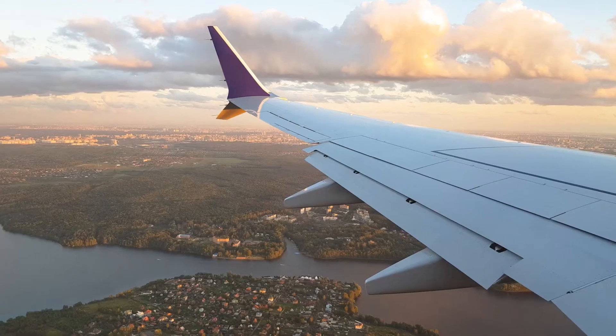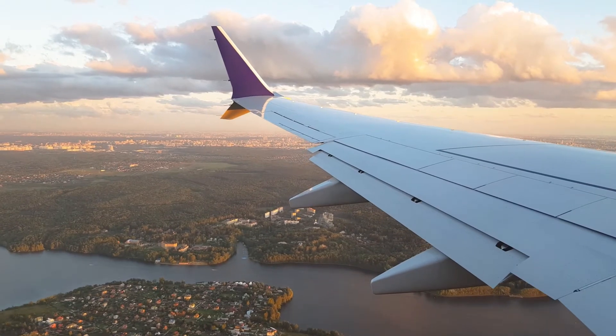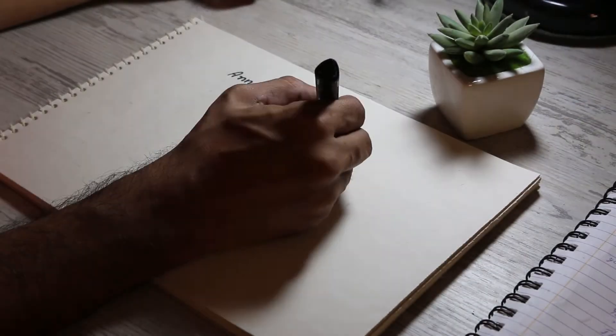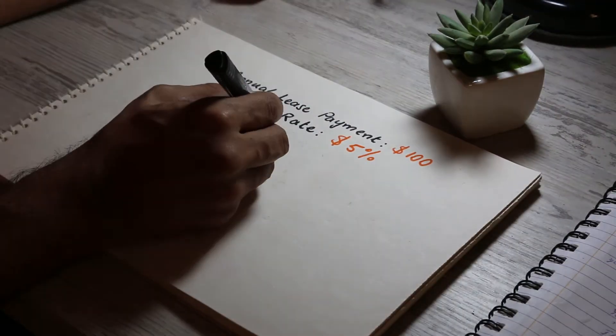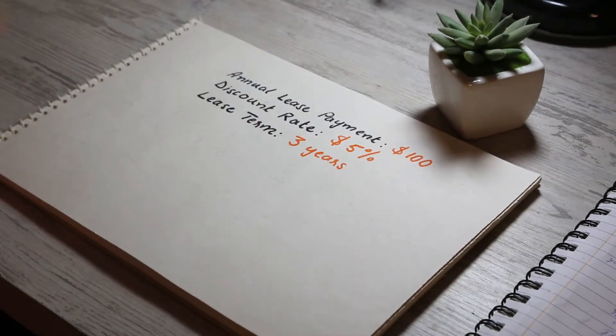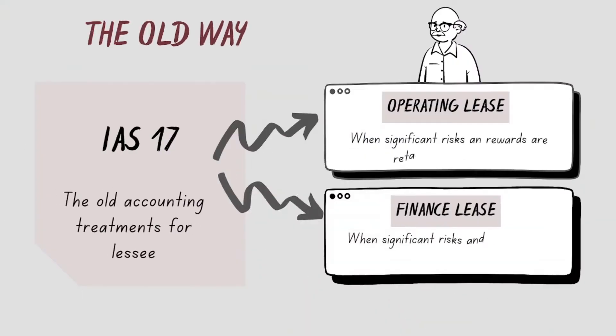Let's understand lessee accounting in a way that makes sense. Your business needs a Boeing 737 for 3 years. Now it doesn't make sense to purchase a huge asset — an airplane — just for 3 years, so you choose to lease it instead. You have to make a payment of $100 at the end of every year for 3 years. The question is: how should we account for this transaction in accordance with IFRS 16?